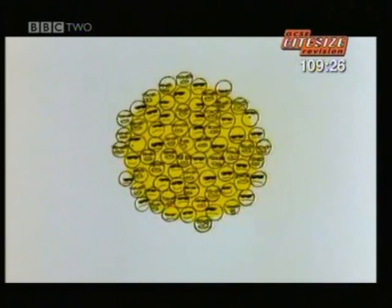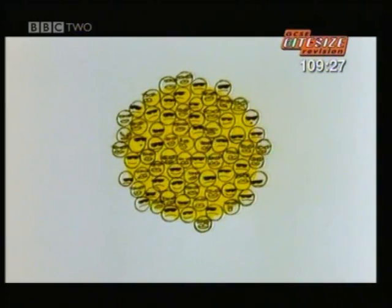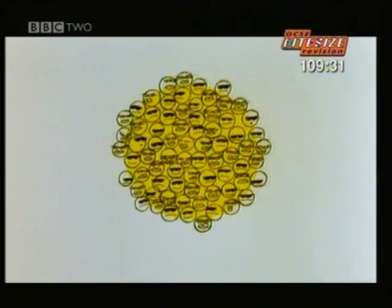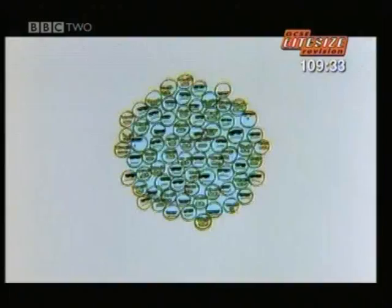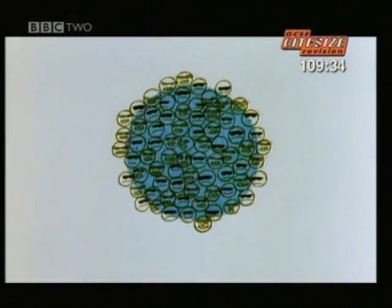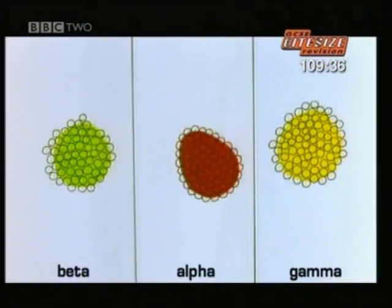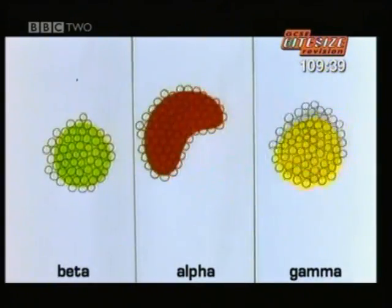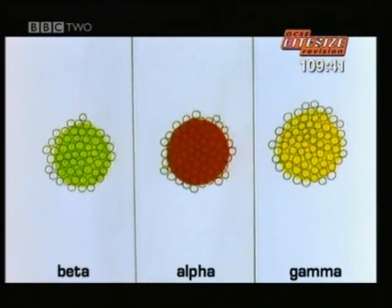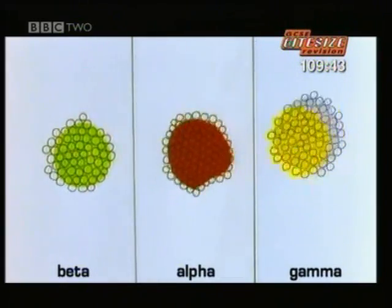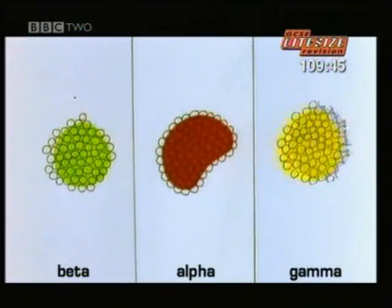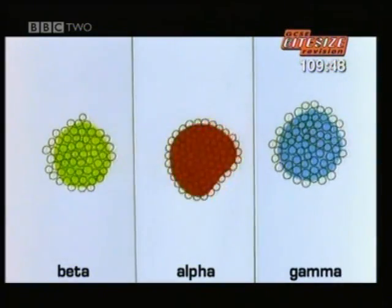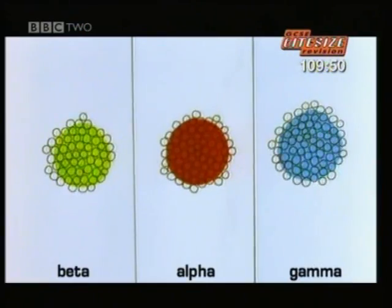Gamma radiation is an electromagnetic wave with very high energy. It's sometimes given off by a nucleus which has just decayed in another way, as the nucleus struggles to make itself stable. Atoms of the same type always decay in the same way, so it's often possible to work out what type of atom is involved by detecting and measuring radiation — the radiation is a tell-tale clue to the atom which created it.